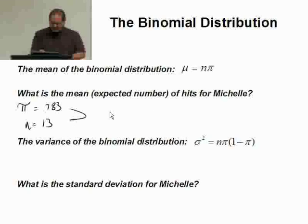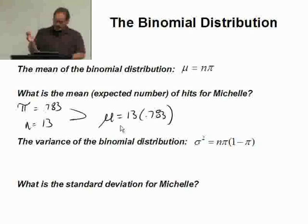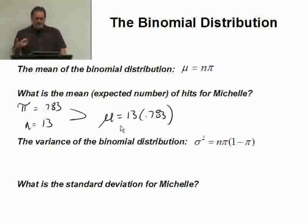So this tells us collectively that mu must be equal to 13 times 0.783. Whip that into your calculator and see what you get. We'll come back to that and do that in a calculator in just a second.